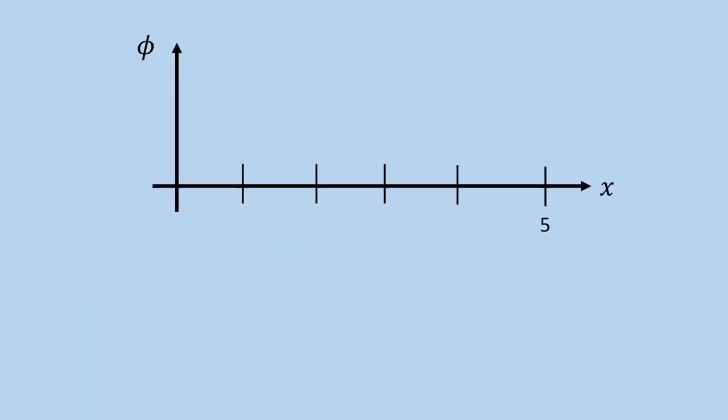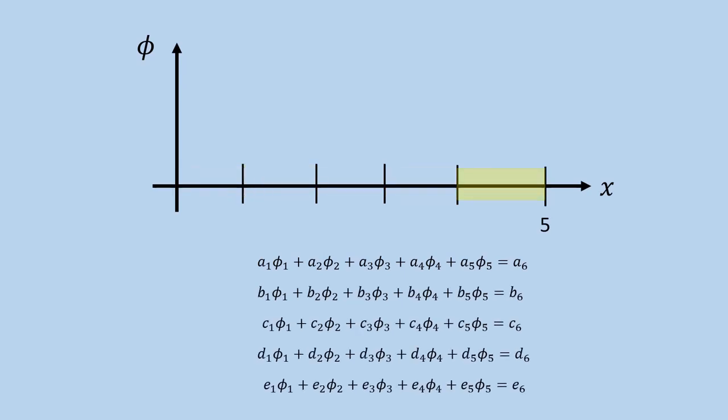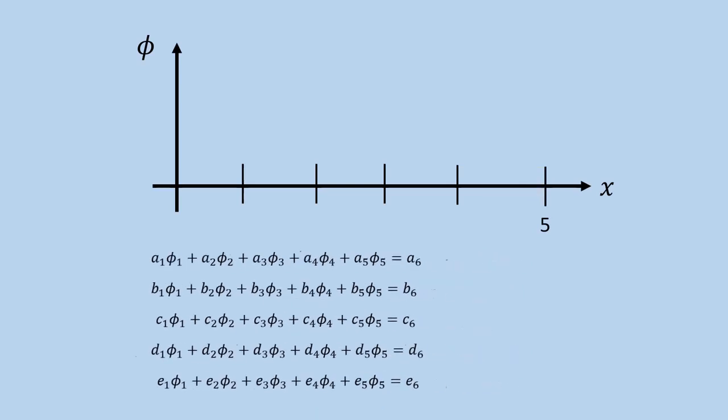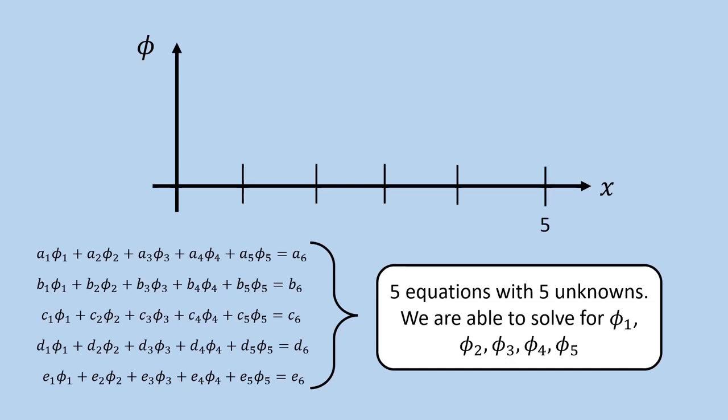Each of the 5 segments will generate a linear equation. The unknowns in the equation is the central value of phi within the segment. Basically, the value of phi in the middle of each segment. So, segment 1 will generate equation 1, segment 2 will generate equation 2, and so on. For now, do not worry about how to generate these equations. In due course, we will learn how to go about it. The important thing for now is to realize that we have 5 equations with 5 unknowns. Thus, we will be able to solve for phi 1, phi 2, phi 3, phi 4, and phi 5.